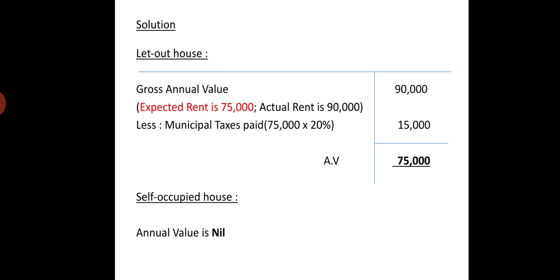For the self-occupied portion, we need no calculation at all because the annual value of a self-occupied house is taken as nil. This problem illustrates the introductory self-occupied house valuation where a person has both a self-occupied house and a let-out property. Such combined problems are coming. Thank you, see you tomorrow.